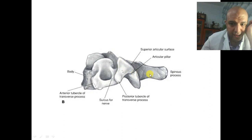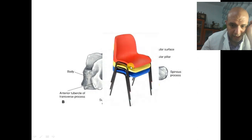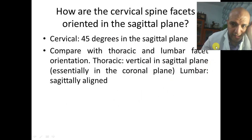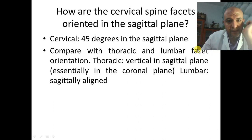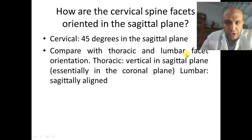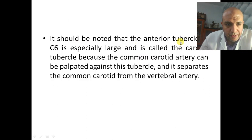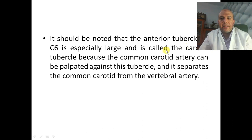If not placing a pedicle screw, then in the lateral mass we will see later. This is the uncovertebral joint — also called the joint of Luschka. The orientation of the facet in the cervical region is 45 degrees.